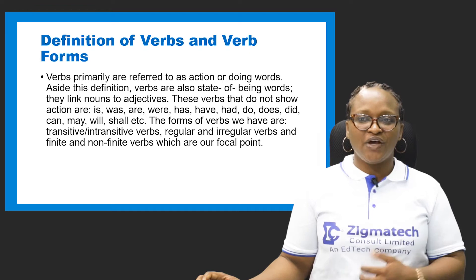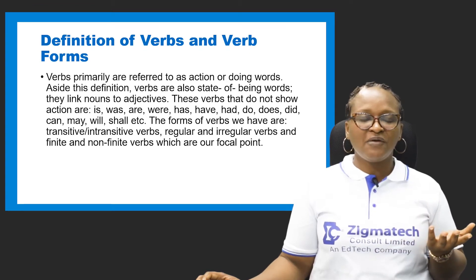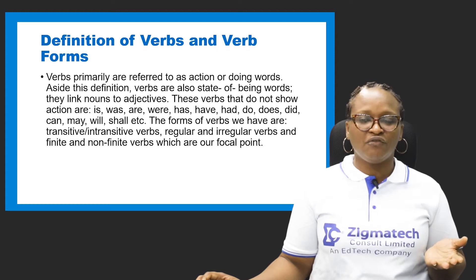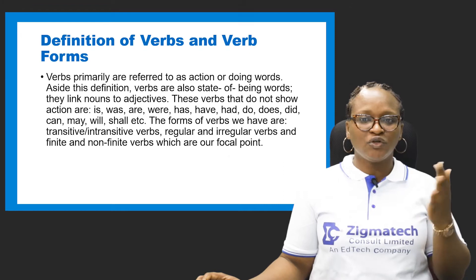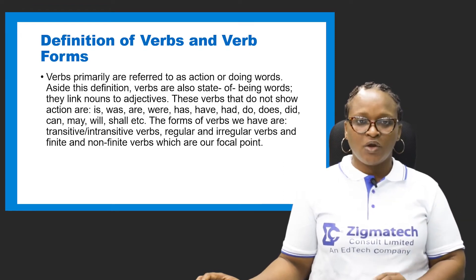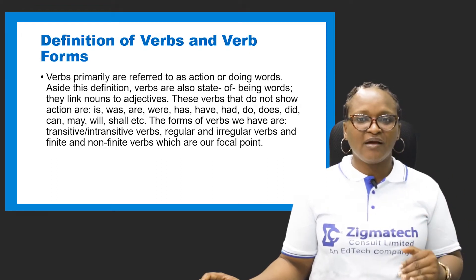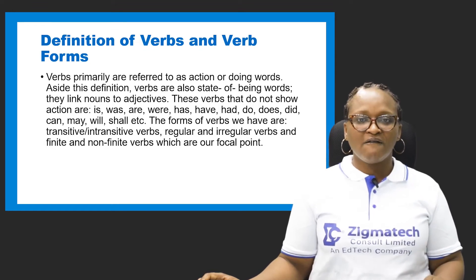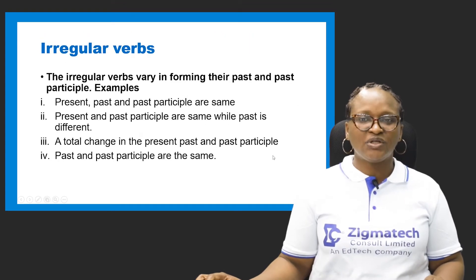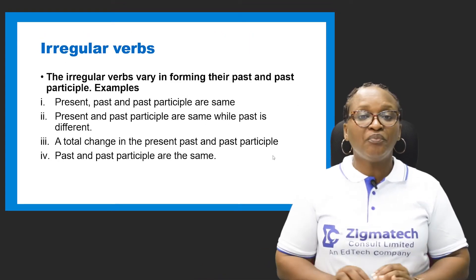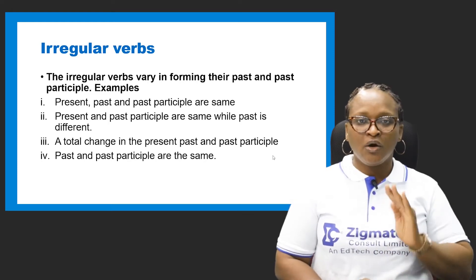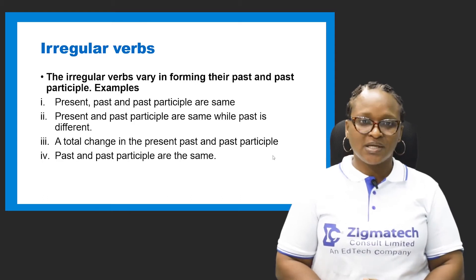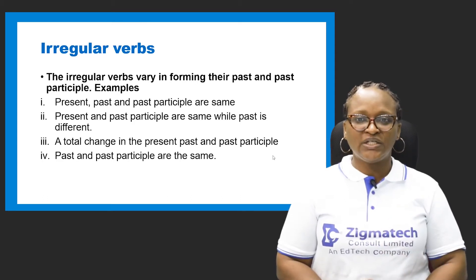What are verb forms? Verb forms are classes of verbs — areas where verbs are used. We have transitive and intransitive verbs, regular and irregular, and finite and non-finite, which is our focal point. It's important that we look at these other forms of verbs at a surface level so we have some knowledge of what they are about.